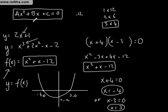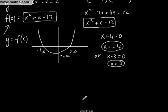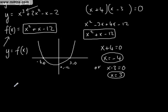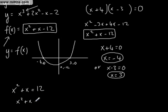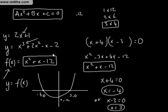We always want to put the equation in the form ax² + bx + c = 0. For example, if we had x² + x = 12, we bring the 12 to the left-hand side: x² + x - 12 = 0. We've got the form ax² + bx + c = 0 and we can go ahead and solve. This is factoring and solving when the coefficient — the number in front of the x² — is 1. In the next video, we'll look at it when it's not 1.